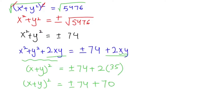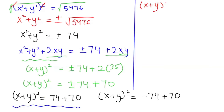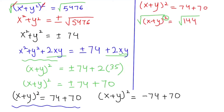Now here we get two solutions. The first: (x plus y)² equals positive 74 plus 70, and the second: (x plus y)² equals negative 74 plus 70. Solving the first case: (x plus y)² equals 144. Taking the square root of both sides, the square and root cancel, so x plus y equals plus or minus root 144, which gives x plus y equals plus or minus 12.